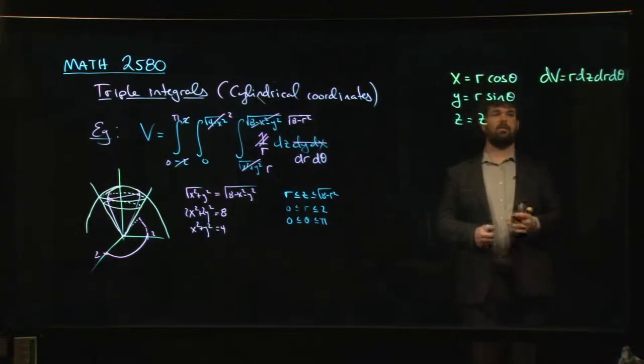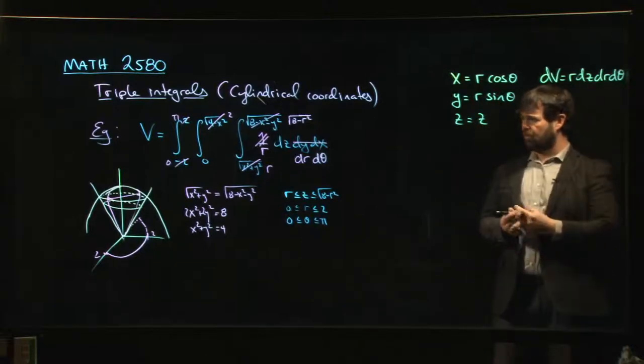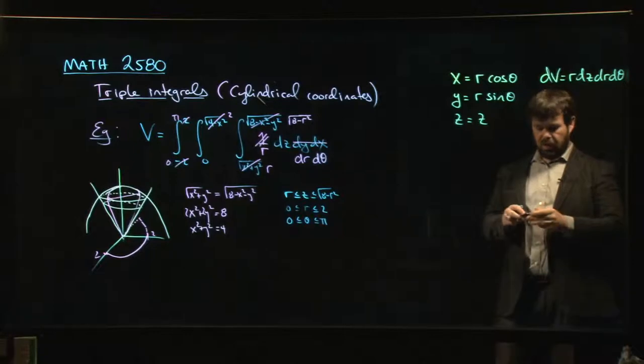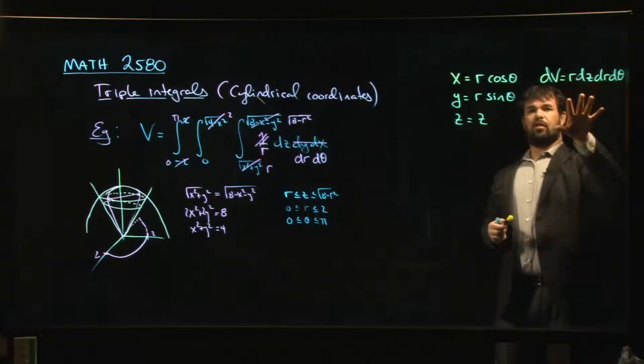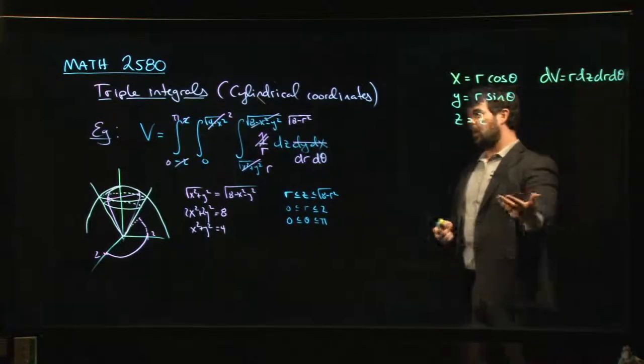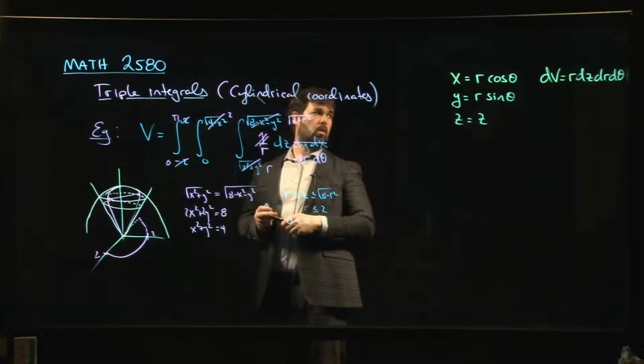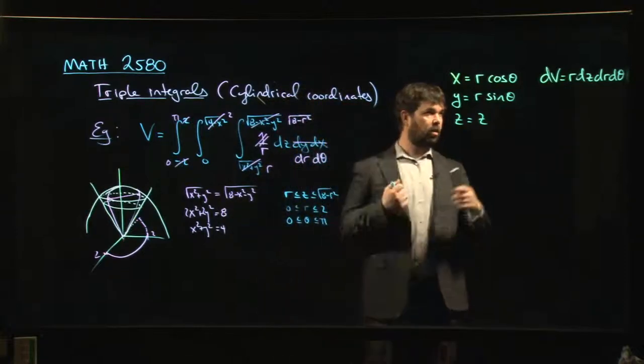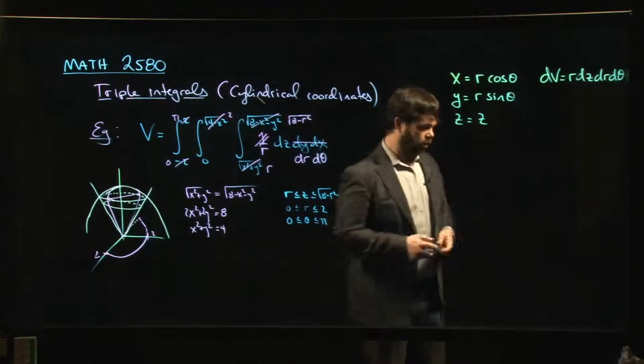As usual for triple integrals, you're not bound to do it in this order, but this is normally the most natural order when you're doing a triple integral, because cylindrical coordinates are very much adapted for this scenario, where once you've done the integral over z, you're left with something that is more natural in polar coordinates. So you do the z integral and then you do a polar coordinate integral.